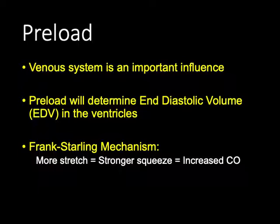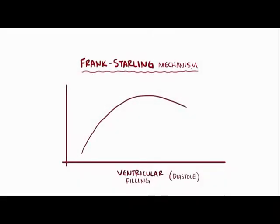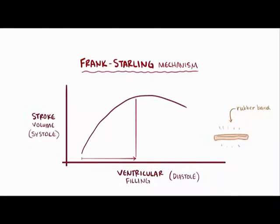What Frank and Starling — two separate physicians — figured out was that if you stretch a muscle, it squeezes; if you stretch it more, it squeezes stronger, up to a limit. Any increase in stretch increases cardiac output. Stretching out the cardiac muscle makes it contract with more force, which increases stroke volume during systole. This is somewhat like how stretching a rubber band makes it snap back harder, except cardiac muscle is actively contracting rather than passively returning to its relaxed state.